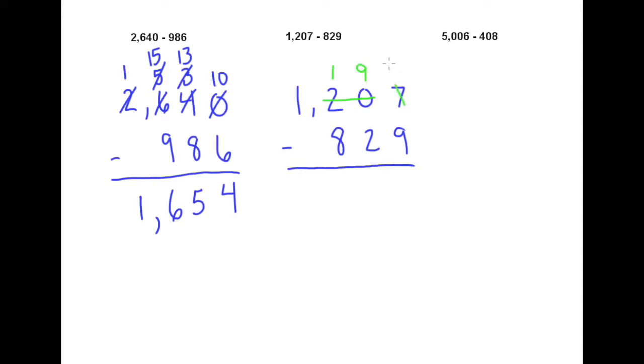That allows me to turn my 7 into a 17. Then I can say 17 minus 9 is 8. 9 minus 2 is 7. But again we're running into this problem of 8 is bigger than 1, so I go over here and borrow the 1 that's there, add 10 to the 1 making it 11. So I get 11 minus 8 is 3. Our answer here is 378.